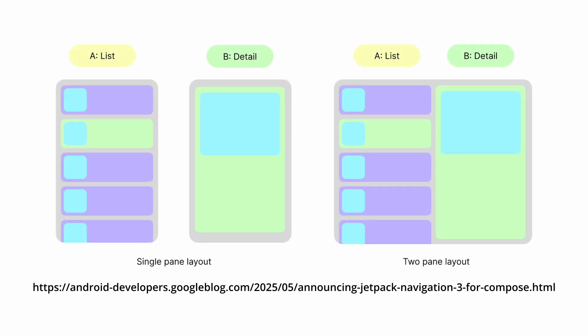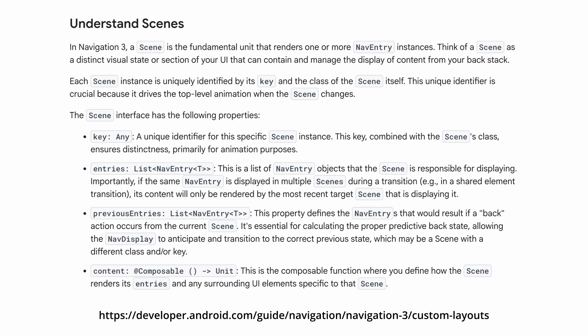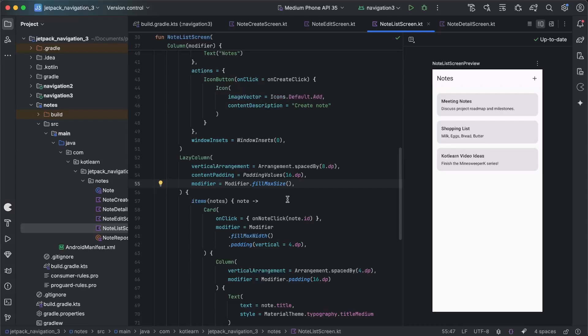Another benefit is that you're not limited to showing one screen at a time anymore. Navigation 2's NavHost could only display one screen from the backstack. With Navigation 3, the new concept of Scenes lets you render any part of the backstack wherever and however you'd like — so that could be side by side, or with complete control over custom transitions. This is quite a big deal for more complex UI patterns, especially when supporting larger screen devices. So now I'm going to show you how to migrate from Navigation 2 to Navigation 3.